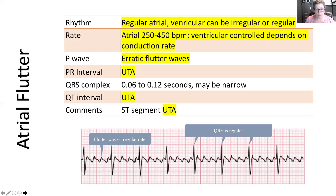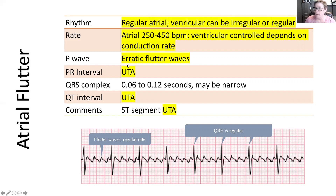The atrial rate is between 250 and 450 beats per minute. If we were to count this across the strip, you can see it's already at 120 and not even halfway through — you would count all of those all the way across. The P waves are erratic flutter waves — sawtooth. We're unable to determine a PR interval. We are able to measure our QRS. We cannot do a QT, and our ST segment is undistinguishable.